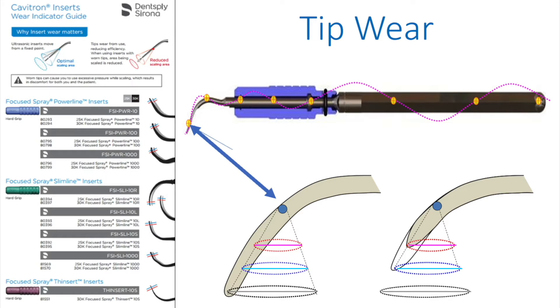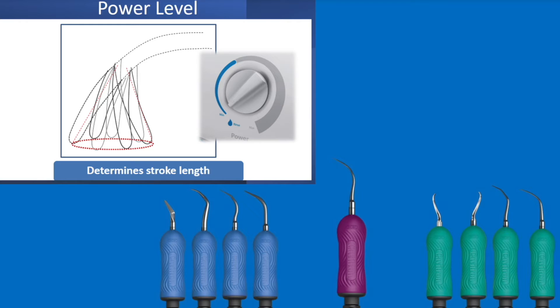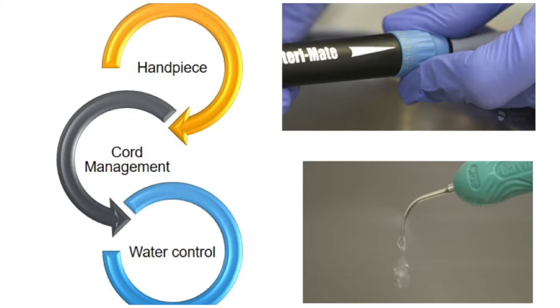Measurement cards can be requested and sent out by the service department or your local Dentsply Serona account manager. Whichever insert is being used, it should be used on a water and power setting dependent upon type and the age of the insert.